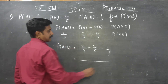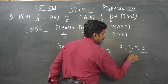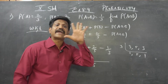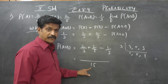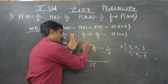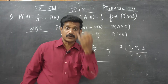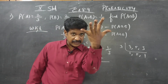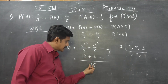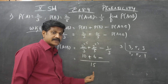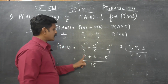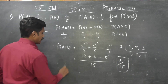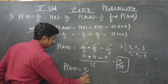Taking LCM of 3 and 5, which gives 15: 2 by 3 equals 10 by 15, and 2 by 5 equals 6 by 15. So 1 by 3 equals 10 by 15 plus 6 by 15 minus P of A intersection B. That gives 5 by 15 equals 16 by 15 minus P of A intersection B. Therefore P of A intersection B equals 16 by 15 minus 5 by 15, which is 11 by 15.